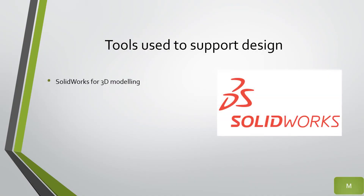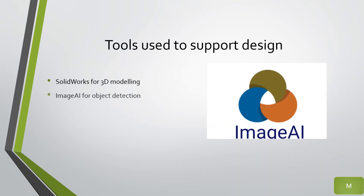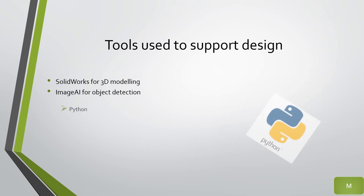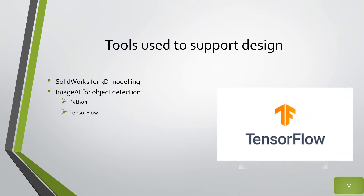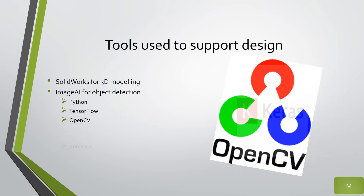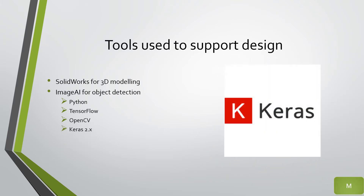SolidWorks was used to model the device in 3D space around the human head. ImageAI is an open-source Python library built to empower developers to build applications with self-contained deep learning and computer vision capabilities. It provides powerful methods to perform object detection on images, using the TensorFlow backbone, OpenCV library, and Keras for its computer vision operations.